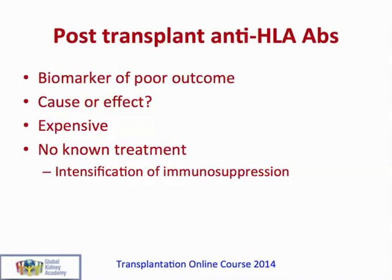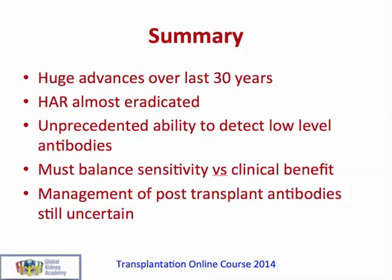In summary, there have been huge advances in tissue typing over the last 30 years. Hyperacute rejection has almost been eradicated by performing pre-transplant crossmatches and more recently by virtual crossmatches. We now have an unprecedented ability to detect low-level antibodies, but we must balance sensitivity with clinical benefit. It is still uncertain whether extremely low levels of anti-donor antibody are indeed harmful. The management of developing post-transplant antibodies remains uncertain but is an active area of interest.